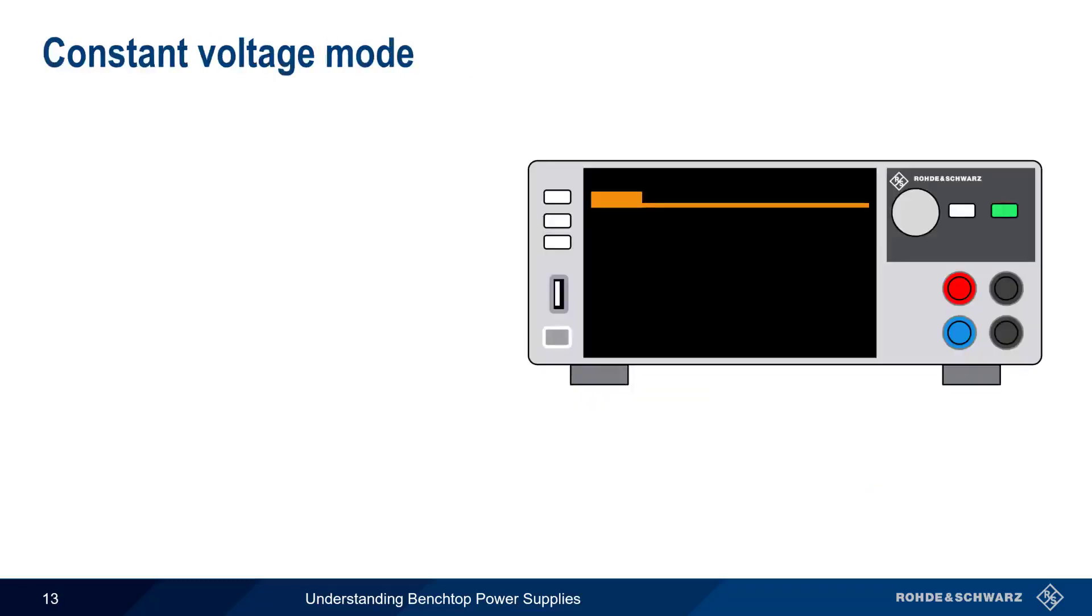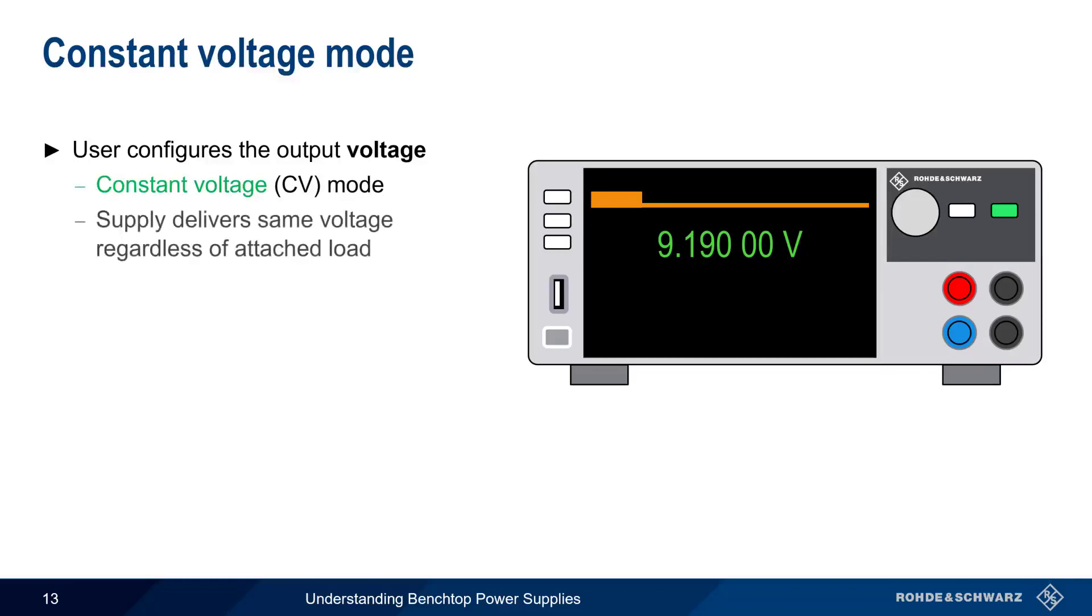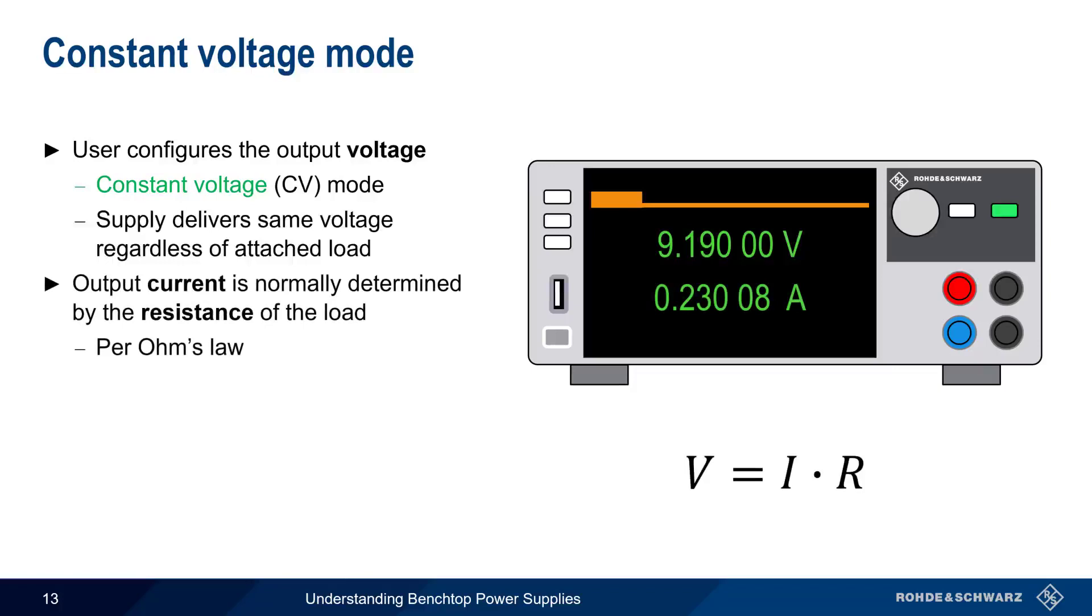The third main use of readback is related to something called constant voltage and constant current modes. Recall that the user of a benchtop DC power supply normally starts by configuring the output voltage. And in most cases, the supply operates in so-called constant voltage mode because the supply delivers the same, or a constant voltage, regardless of the attached load. Recall also that the output current in this case is determined by the resistance of the attached load as per Ohm's law. It's not directly configured or specified by the user.